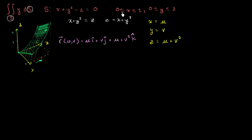And then u is going to be between 0 and 1, because x is just equal to u. So u is going to be between 0 and 1, and v is going to be between 0 and 2.